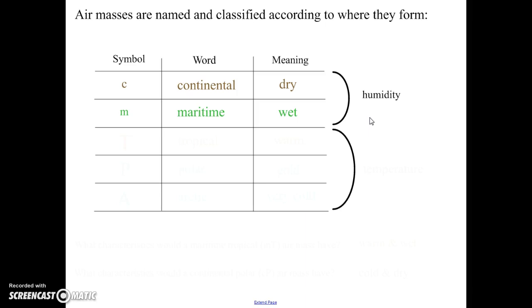Now the other part of the name is going to be based on the temperature of the air mass. So there are three temperatures that we refer to with air masses. Capital T stands for tropical. So this is going to be a warm air mass that was stationary over a tropical region.